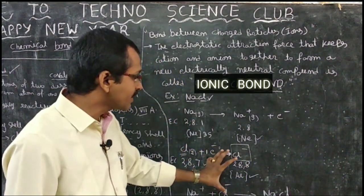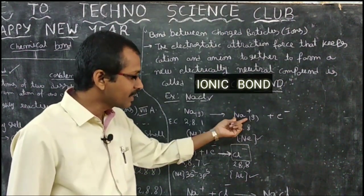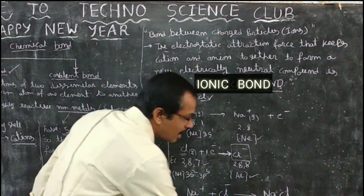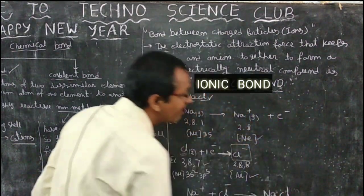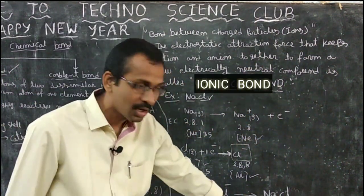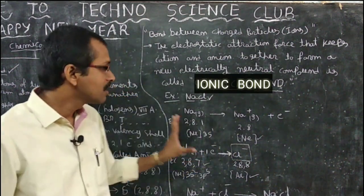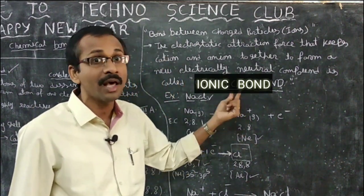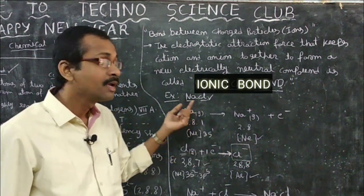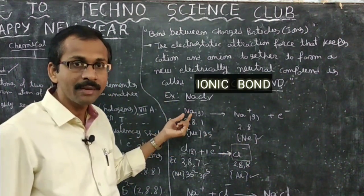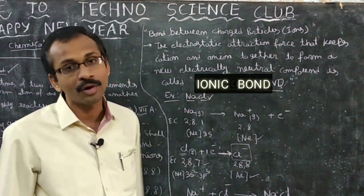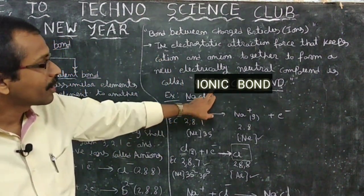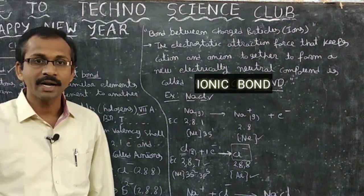These cations and anions — Na+ and Cl− — combine together. Na+ and Cl− form an electrically neutral compound called NaCl, sodium chloride. This is the ionic bonding: the bond between two ions — a cation and an anion — one Na+ cation and one Cl− anion. This ionic bond between sodium and chlorine forms the compound sodium chloride, which is an ionic compound.